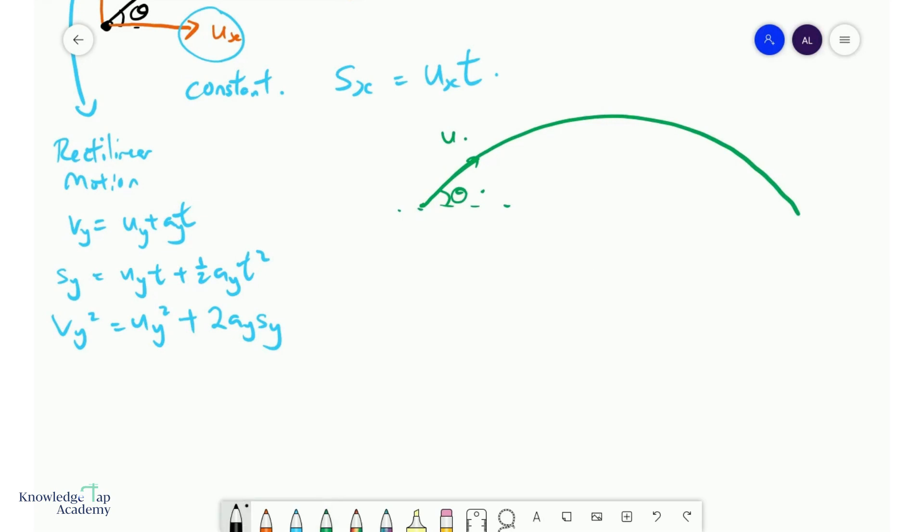And so what we could do, let's say I want to figure out how long is the entire journey. So the time, what we like to call the time of flight. Let's call it T. And so we choose our start, we choose our end, and we do a SUVAT analysis in the y domain.